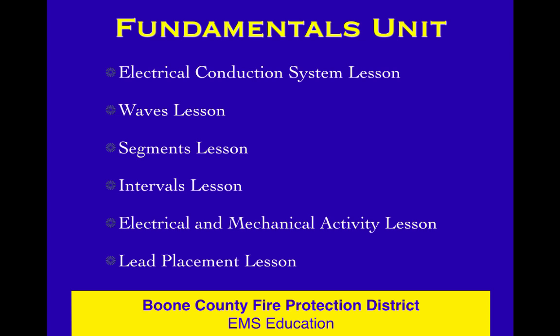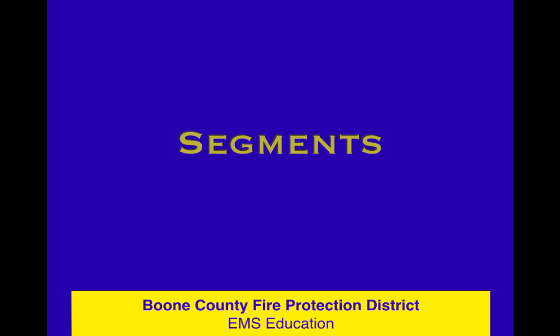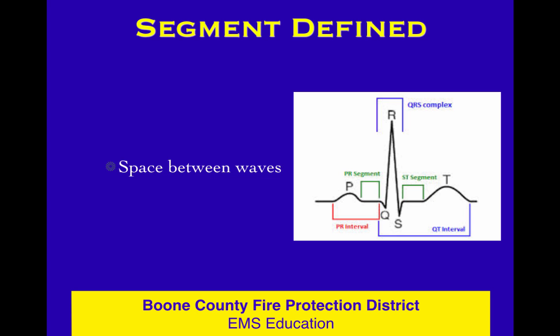Remember waves: P-wave, QRS, T-wave. Now we're going to talk about segments. The definition of a segment is the space between waves. So if we have a P-wave, then a QRS, and then a T, there's a space between that P and the R-wave — we call it the PR segment. Then there's a space after the QRS between the S and the T-wave — we call it the ST segment.